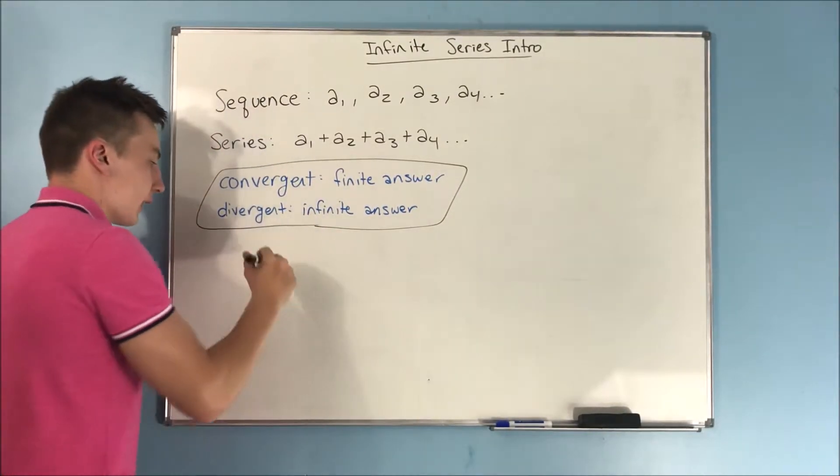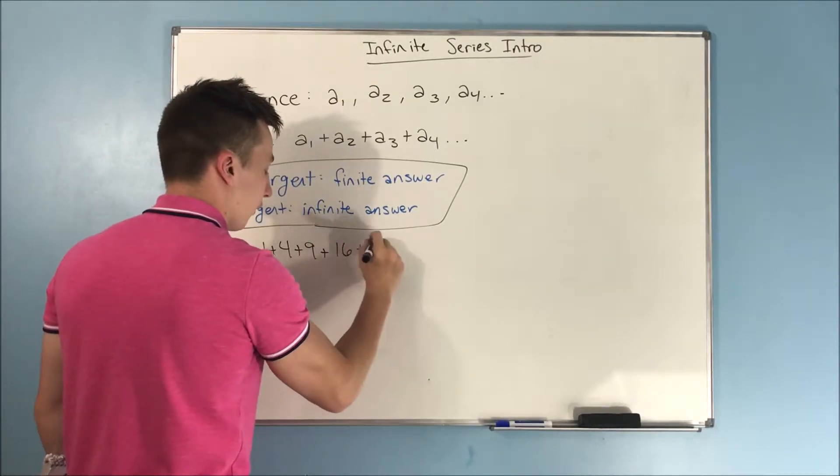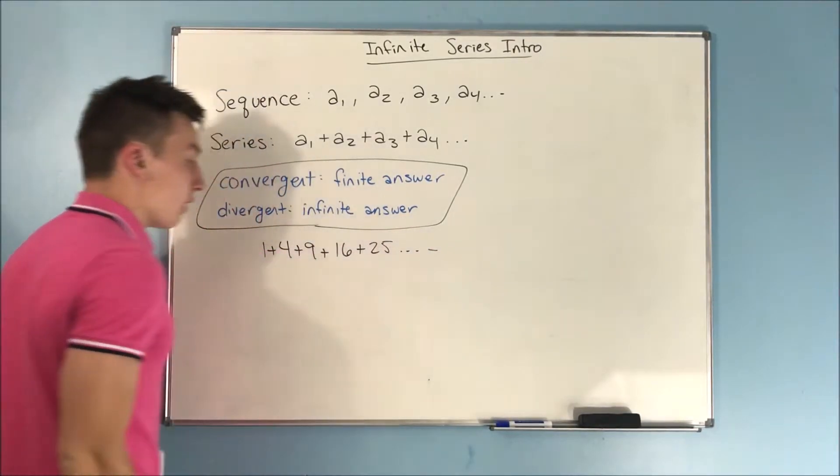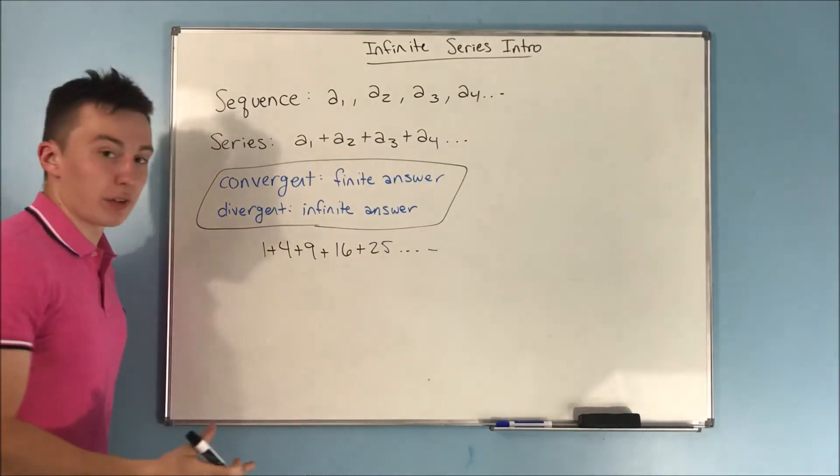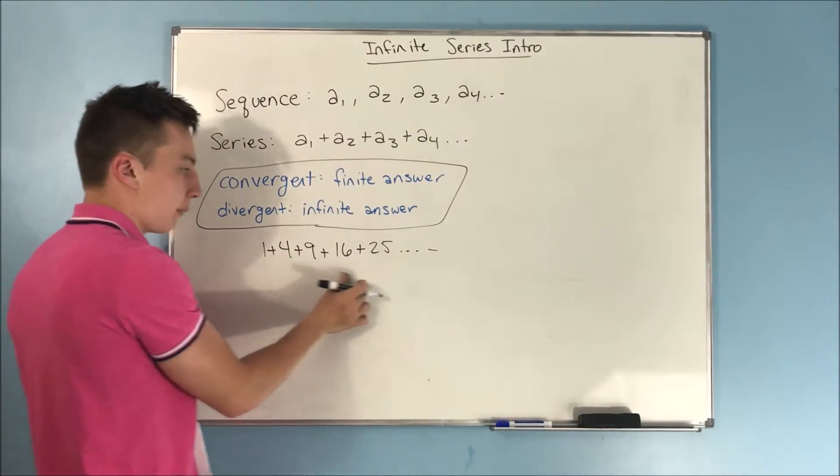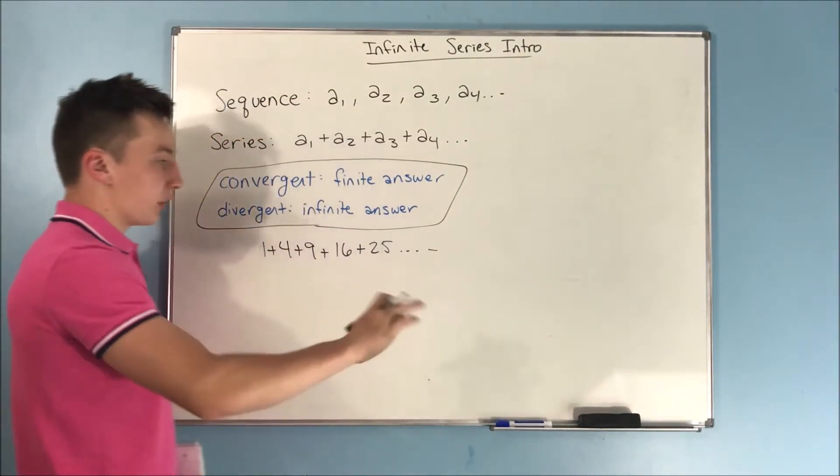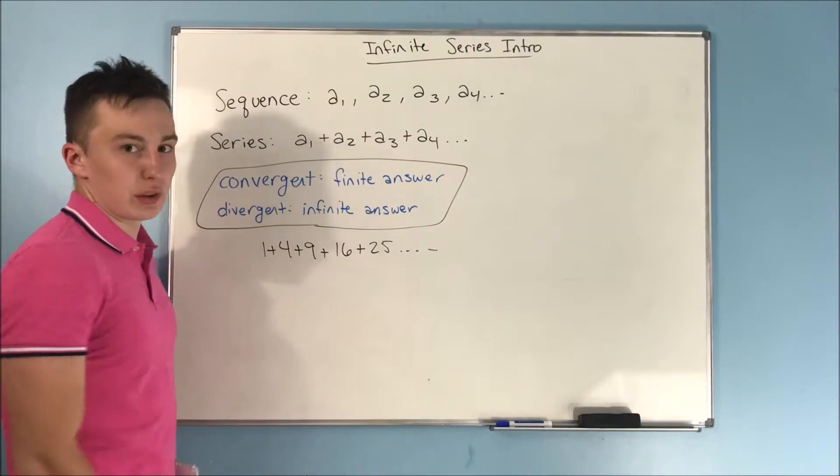So first off, let's look at this series 1 plus 4 plus 9 plus 16 plus 25. Now this is obviously divergent, right? It obviously goes off into infinity. You can see that. It's getting bigger and bigger and bigger, and all those terms are getting added together. Yeah, there's no way that that's not divergent.